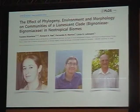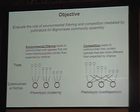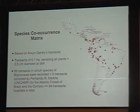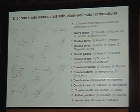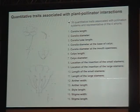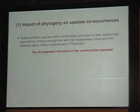Since we have a general understanding of patterns of morphological variation, and knowing that trait evolution is important for understanding community assembly, we looked at the effect of phylogeny, environment, and morphology on the assembly of liana communities. The general objective was to evaluate the role of environmental filtering and competition mediated by pollinators in Bignoniaceae communities. We used a large dataset from Al Gentry's transects, five different environmental layers from WorldClim, and the same discrete and continuous traits we had already quantified in our morphological evolution studies.